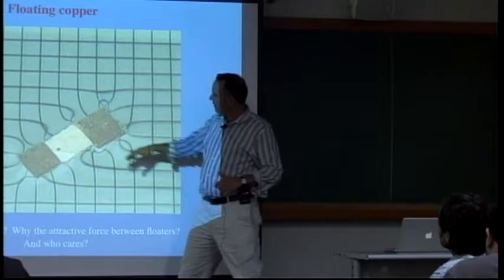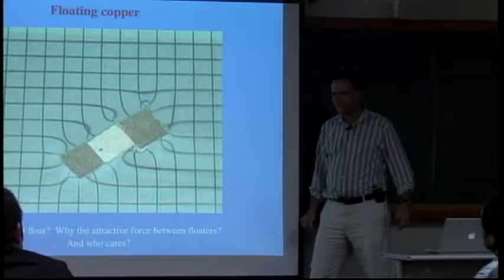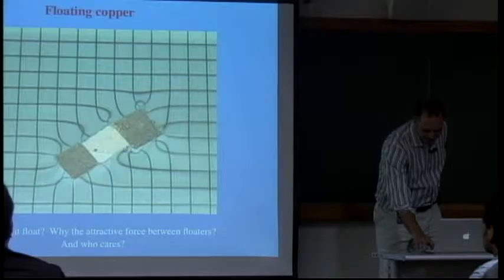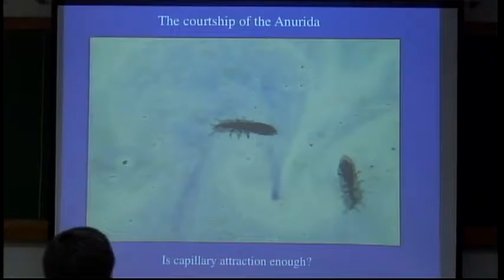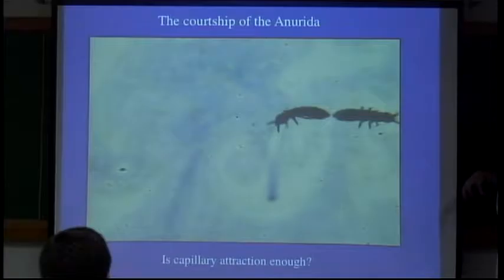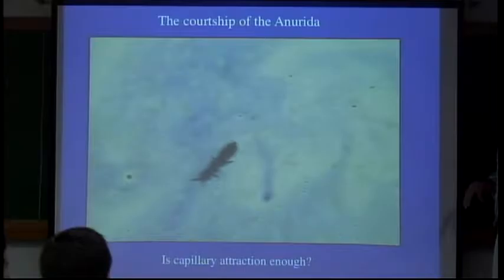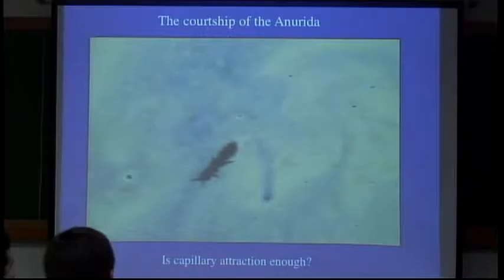In regions where the grid lines are greatly distorted, it means there's a large deflection of the interface. Who cares about these things? Well, these bugs do, because this is how they attract their mates. They basically distort the interface in order to generate capillary attractive forces, and then if they decide it's not a love connection, they try and separate — they try to escape, and the surface tension was not enough to bind them together.